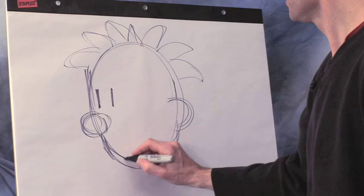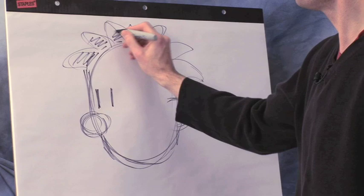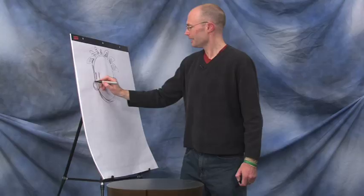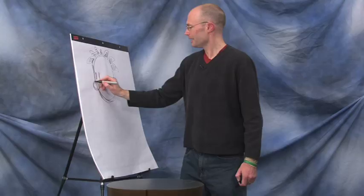One of the things kids always notice is his hair. And then I quiz the kids when I'm doing a school visit. I'll say, how many spikes of hair does Big Nate have on his head? And then they count it up and they say seven.